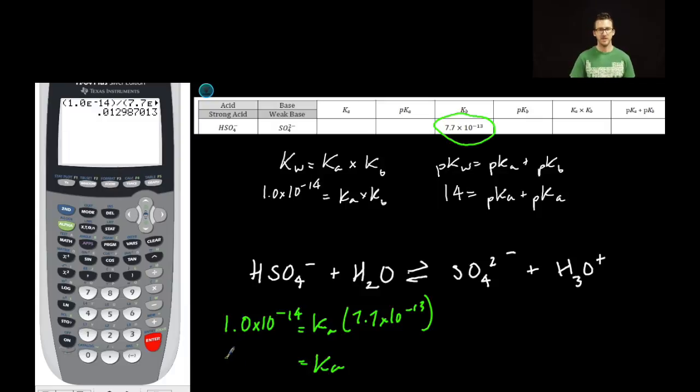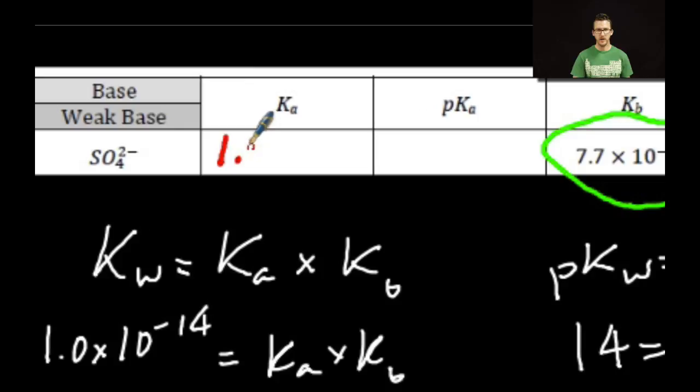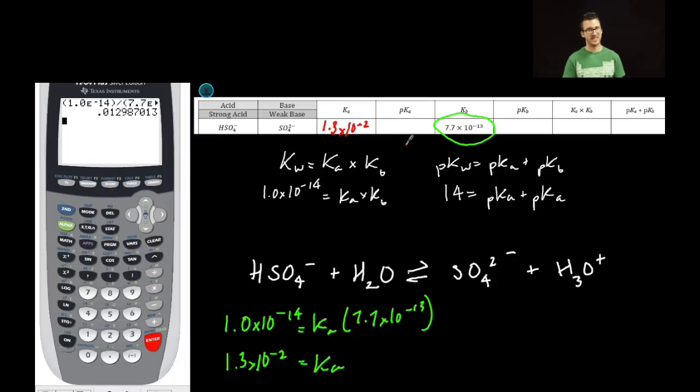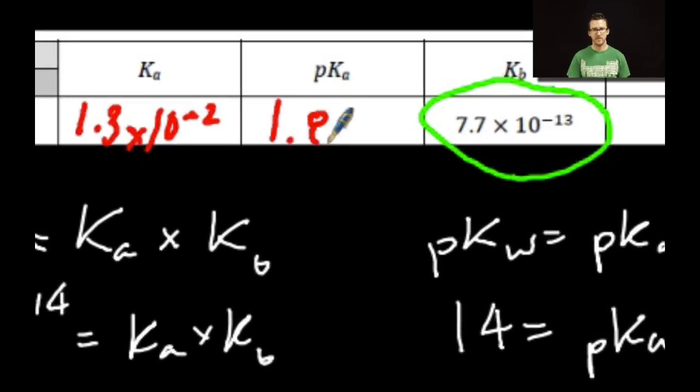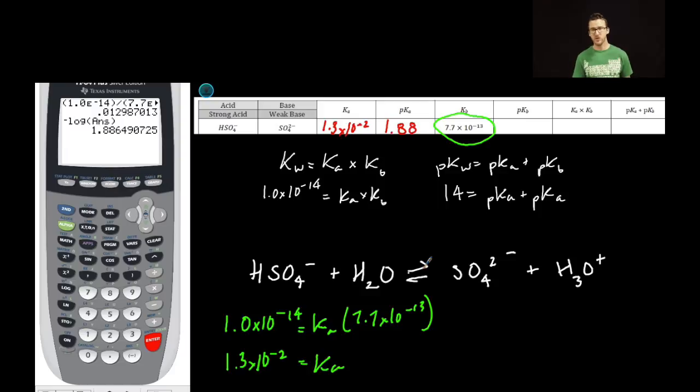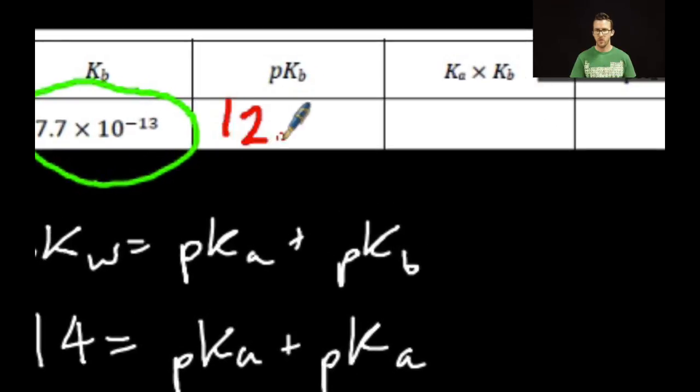The Ka for my acid here is going to be 1.3 times 10 to the negative 2. I'm going to transfer that to my data table, 1.3 times 10 to the negative 2. My pKa is just the negative log of my Ka value. I'm going to take negative log of that Ka value to get a pKa of 1.88.